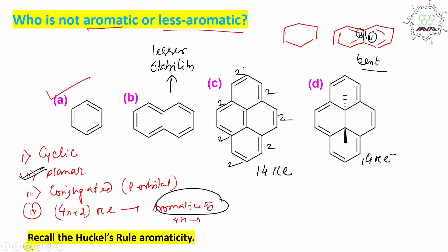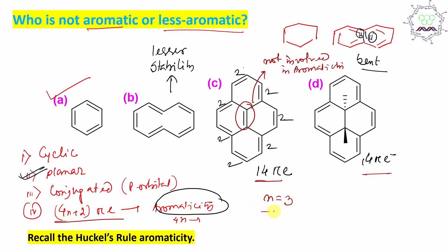Now you may ask: are you making a mistake by not counting one pi bond? Yes, I am not counting that pi bond because it is not involved in resonance or aromaticity. So both pyrene and dimethylpyrene have 14 pi electrons. According to the 4n+2 rule with n=3, both are aromatic. Many of you may make the mistake of thinking there are only 2 electrons, so it must be anti-aromatic. No, it is not anti-aromatic — it is a very stable molecule. I have even worked with this molecule in my laboratory. So both are stable.